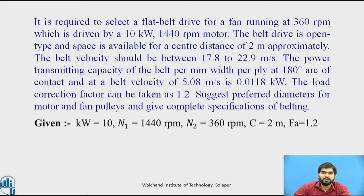The belt velocity should be between 17.8 to 22.9 meter per second. The power transmitting capacity of the belt per mm width per ply at 180 degree arc of contact and at a belt velocity of 5.08 meter per second is 0.0118 kilowatt. The load correction factor can be taken as 1.2.